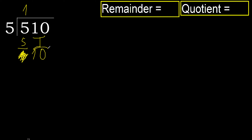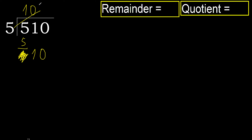2 numbers, therefore complete. Always complete with 0, ok? Because here there are 2 numbers. 10. 5 multiplied by 2 is 10.